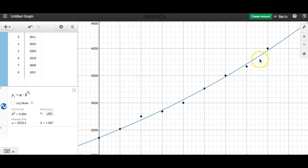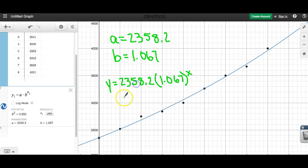Here's our regression. You can see this curve here is fitting our data fairly well. We can see that A is 2,358.2 and B is about 1.067. So we know our equation is Y equals 2,358.2 times 1.067 to the X.